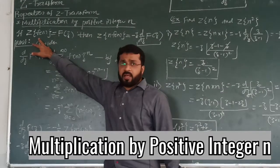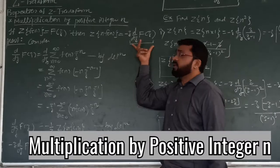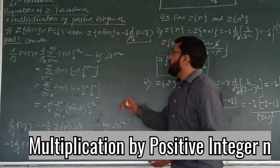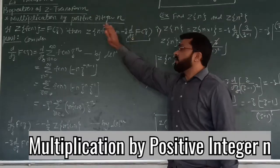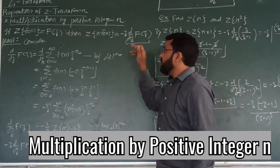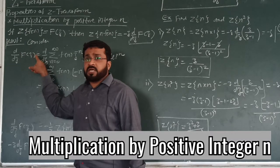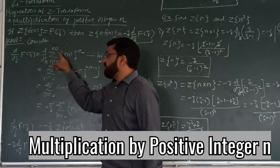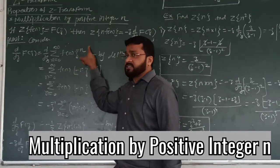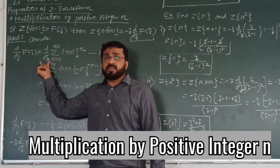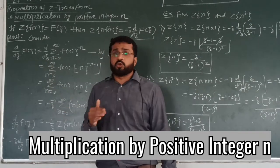So F(n) is equal to N. We have to take the Z-transform and prove this formula. We consider the RHS, excluding the minus Z term, and show it equals the LHS. So we have RHS as d/dZ of F(Z). F(Z), using the definition of the Z-transform, can be written as the summation from N equals 0 to infinity of F(N) times Z to the power minus N. Now d/dZ means the derivative with respect to Z, and N goes from 0 to infinity, so F(N) is a constant quantity with respect to Z.